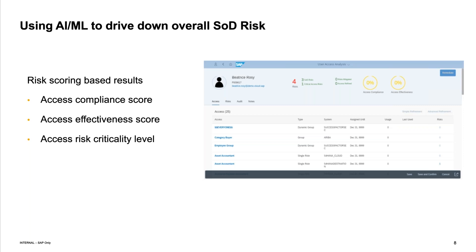For people not familiar with the business process, they may not know which roles could be replaced. This solution helps create what we call refinement proposals that, if approved, can be assigned to update user access, thereby reducing exposure, potential fraud, and risk. Hopefully at the end of this you'll have a 100% compliance score and will have improved access effectiveness — a measure of the number of assignments that are being used. Managing all the different role assignments is costly, and fewer assignments represents a cost saving.